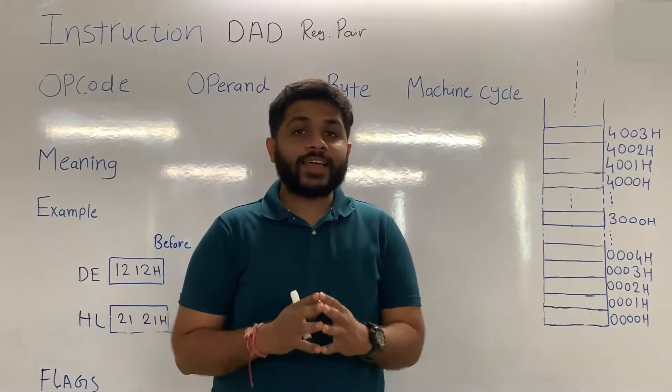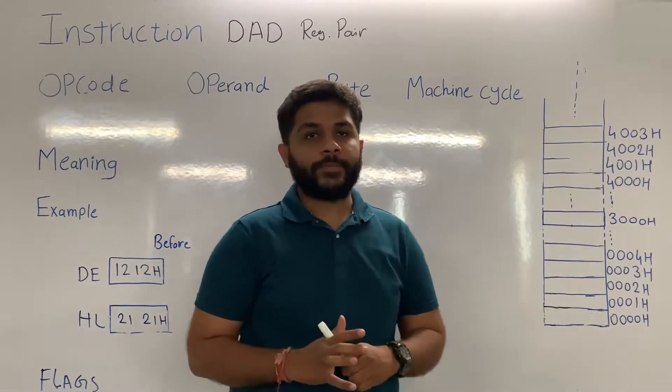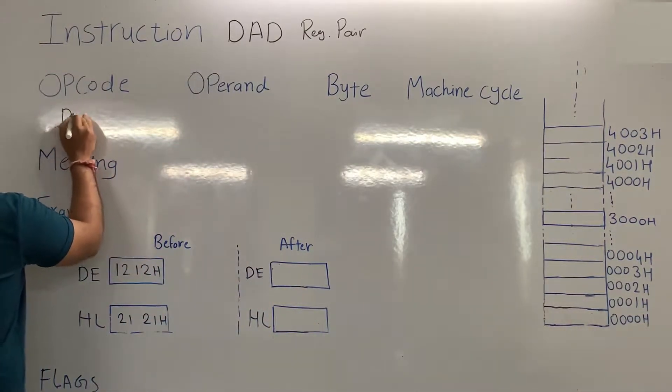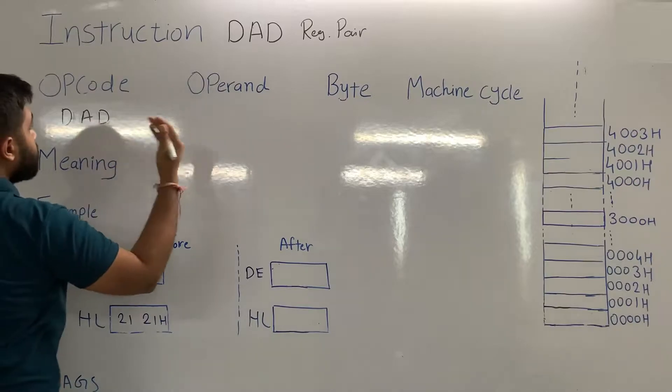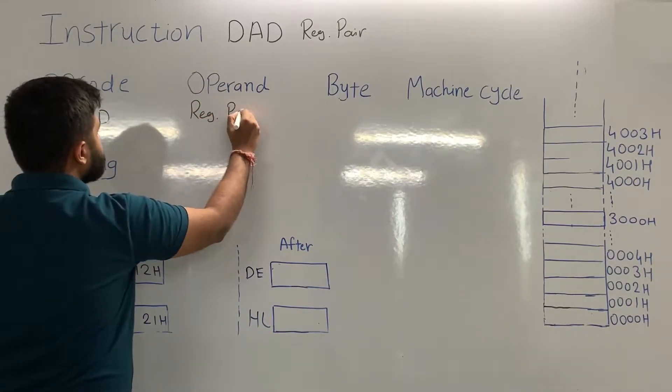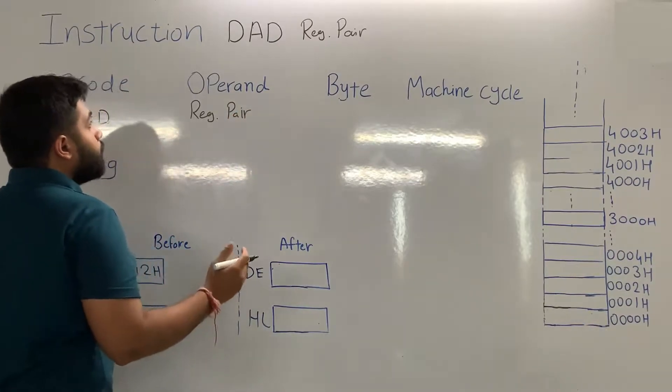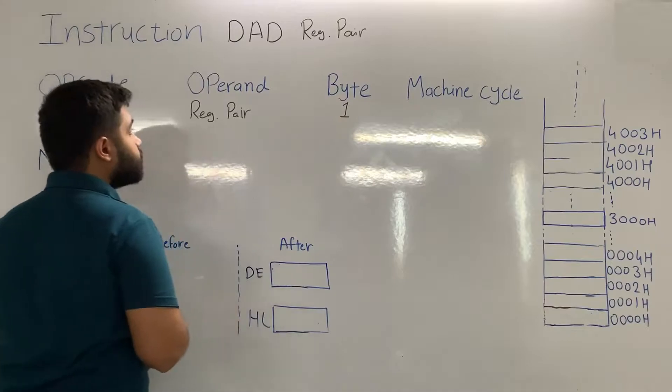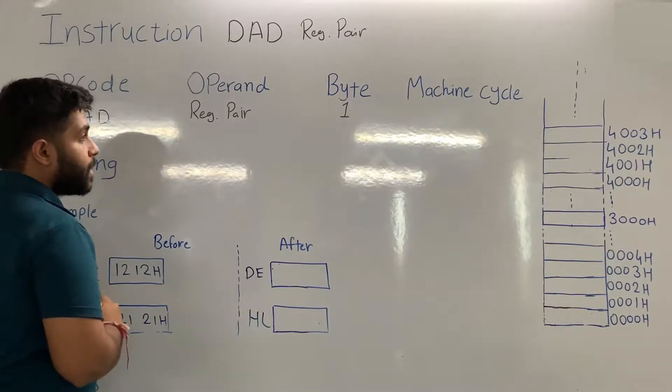So now we are going to see the instruction that is DAD register pair. For this instruction, the opcode is DAD, the remaining part of the instruction is operand, that is register pair. In this instruction, no data is present, it means this instruction is of 1 byte.